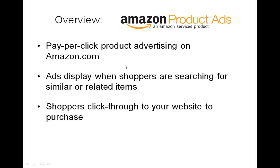With Product Ads, shoppers on Amazon will see your ads in a variety of placements as they search and browse. Our primary placement is on detail pages for products being sold on Amazon — you may have seen a section called 'Product Ads from External Websites,' typically below the product description and Amazon's recommendations. If your product is unique to the Amazon catalog, customers may see your product ad directly in search results, and they can click through to your website or to an Amazon detail page specific to your product.